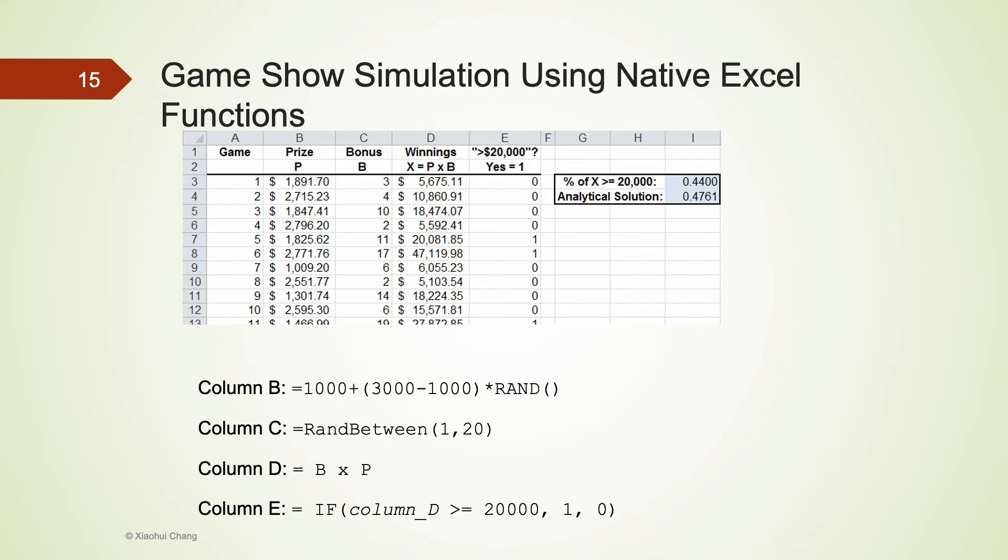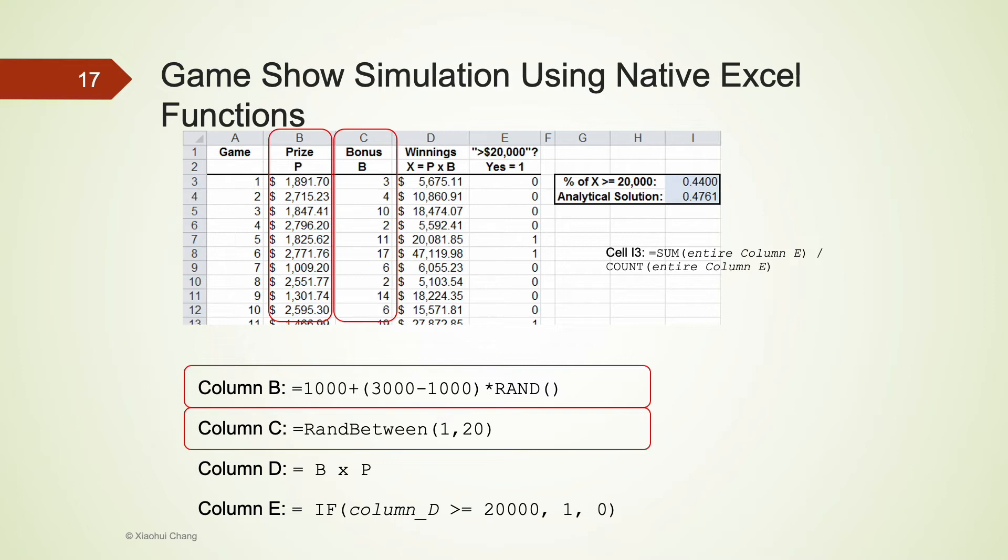Let's take a look at how we can simulate the game show using these Excel functions we just learned. Column A represents the index of the games. Column B represents the price P, that is a real number between one thousand and three thousand. To do that, we use the formula we just learned: one thousand plus two thousand multiply RAND. Column C is the bonus multiplier that is an integer between 1 and 20. We will use RANDBETWEEN function to do that.